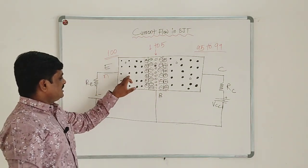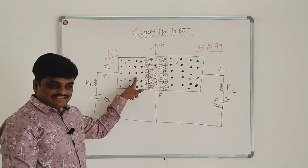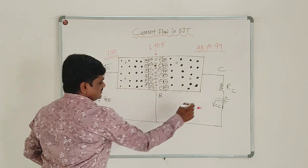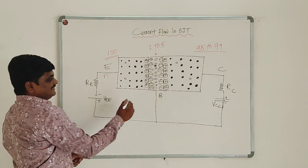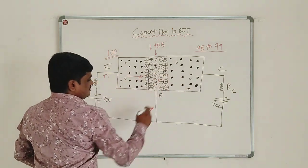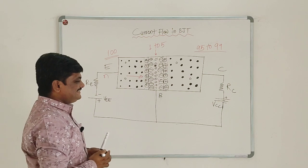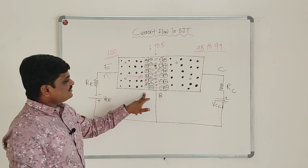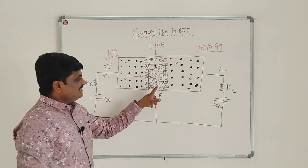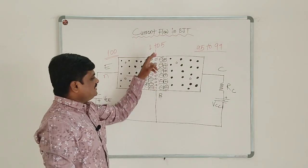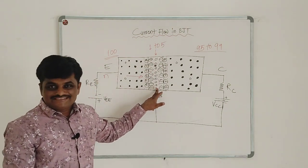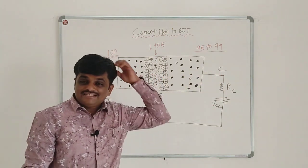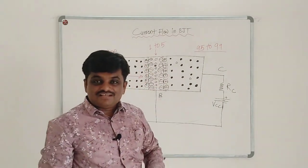The electrons present in the emitter region, which are the majority charge carriers, will be attracted towards the positive polarity of the supply and repelled by the negative polarity. So the electrons will move towards the right side and cross the emitter-base junction. If we consider 100 electrons crossing this junction, say 2 electrons recombine with holes in the base region and the remaining 98 electrons cross the collector junction.